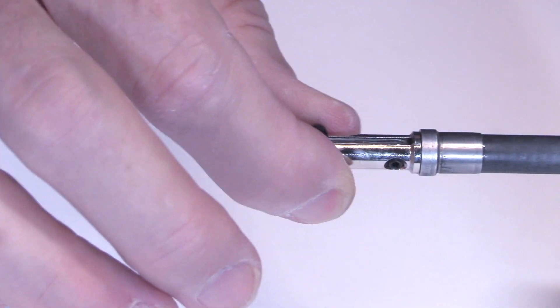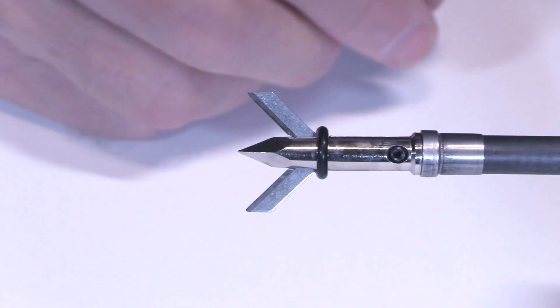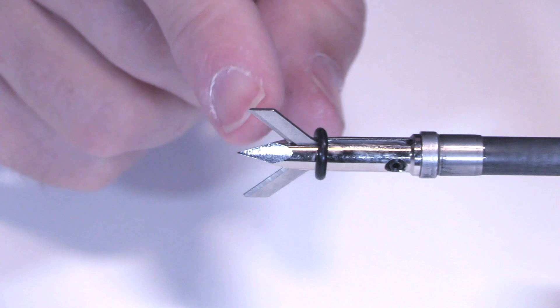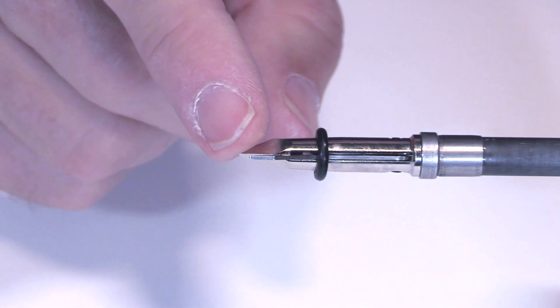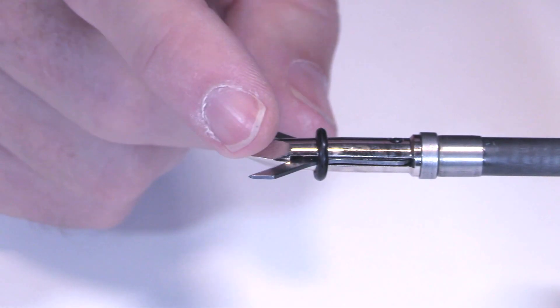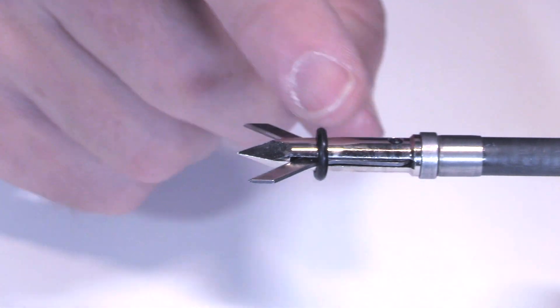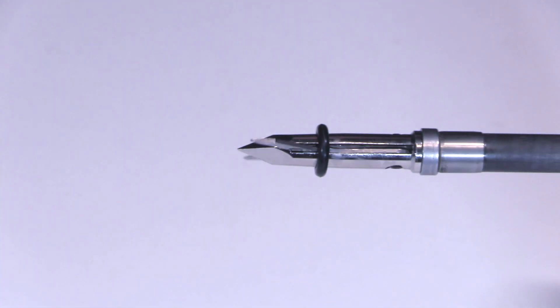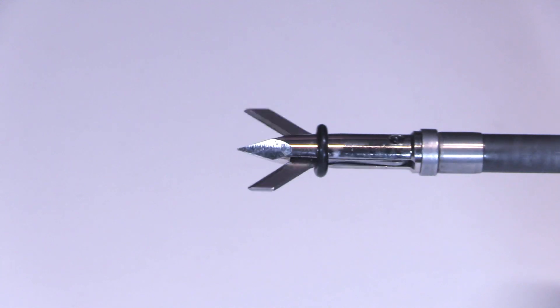The blades are 0.032 inches thick of spring steel. And like I said, it's all steel construction. The tip is this nice classic chisel tip that just goes as one piece into the ferrule there. So I'm eager to see how this head performs.